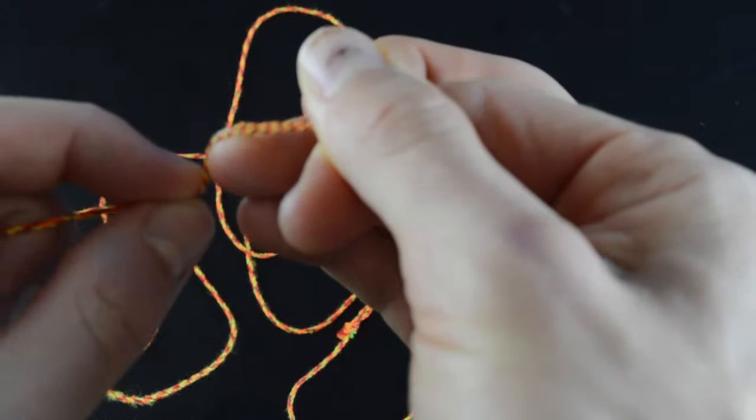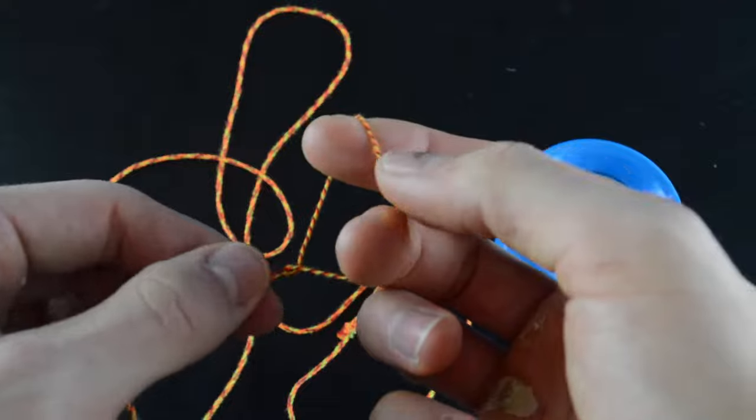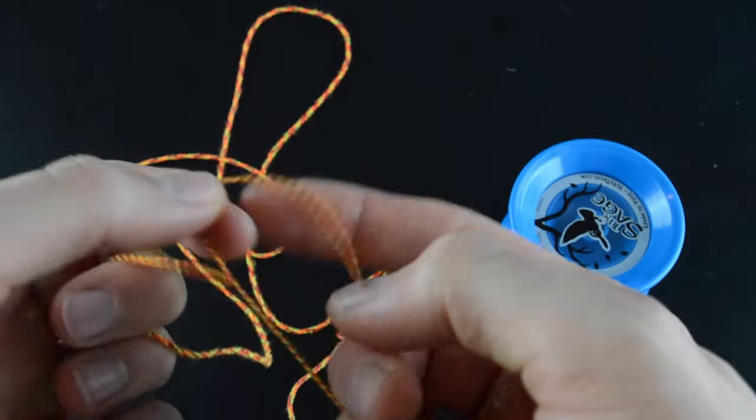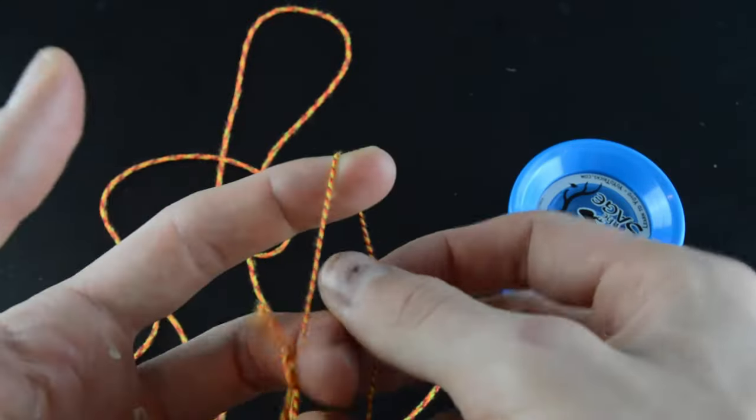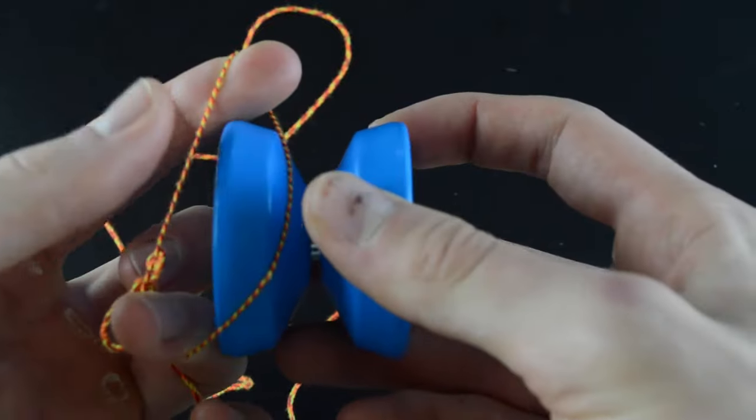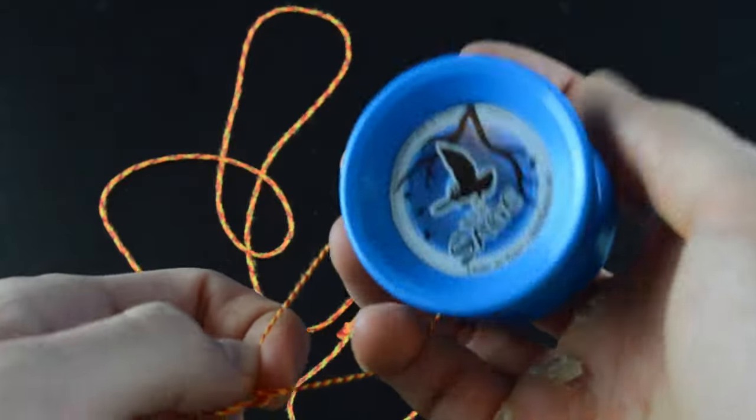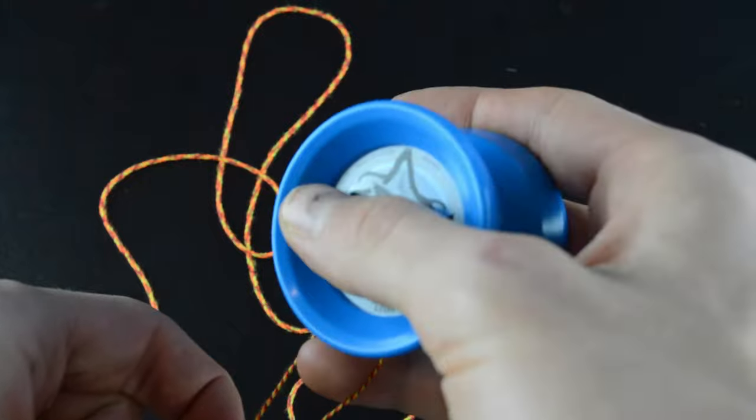Then separate the two halves of the string, creating a loop. Pull this loop apart and slide it around your yo-yo. Then, pull the string tight and let it slowly line back up so that it doesn't tangle up.